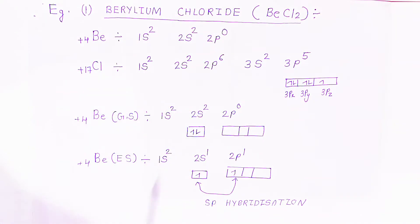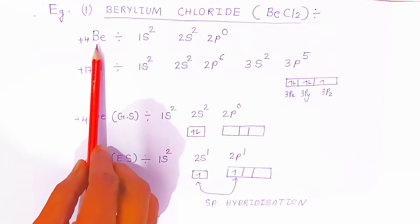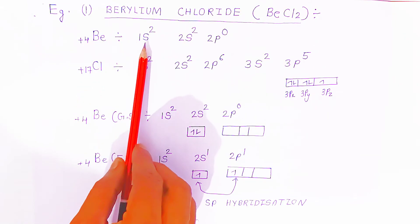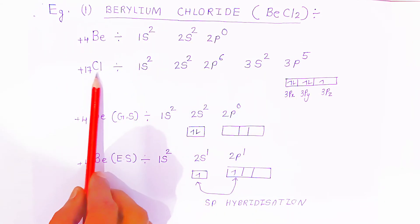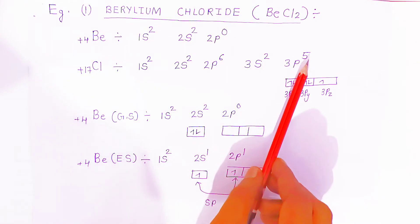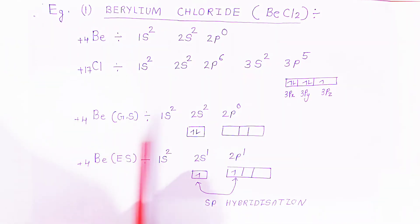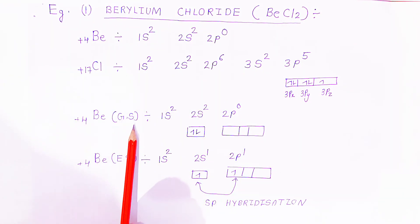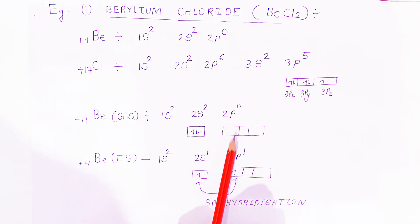Now we are going to see some examples. The first example is beryllium chloride, BeCl₂. Beryllium has atomic number 4 with electronic configuration 1s² 2s² 2p⁰. Chlorine has atomic number 17 with configuration 1s² 2s² 2p⁶ 3s² 3p⁵, so chlorine is lacking one electron in the 3p subshell.